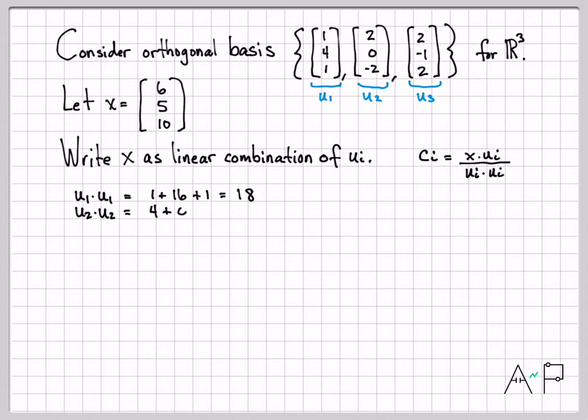Very similar computation for u₂ dotted with u₂. We'll have 4, 0, and 4. Add all that up, you get 8. And then u₃ dotted with u₃, we get 4. A negative 1 times a negative 1 is 1. And 2 times 2 is 4. Add all that up, and we get 9. So I have all the denominator terms computed.